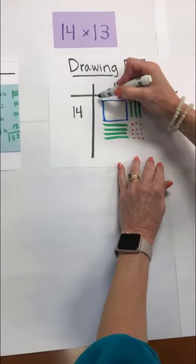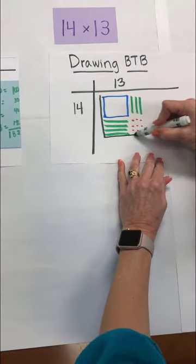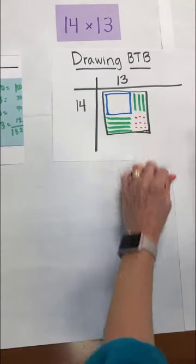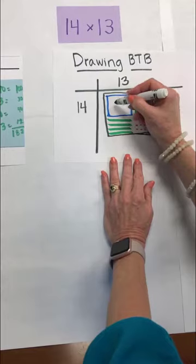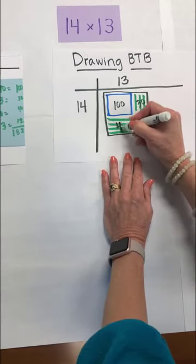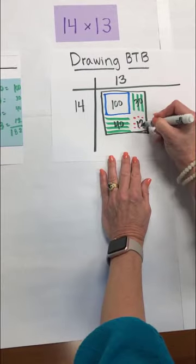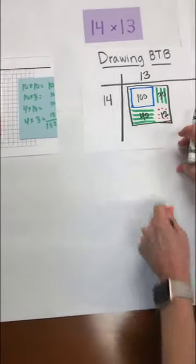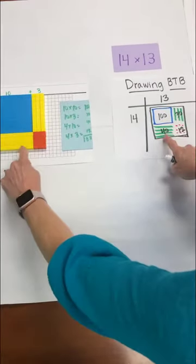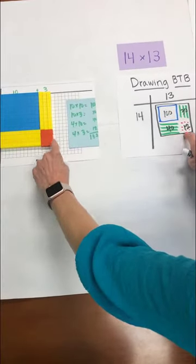So let's think about what this means. This is 100, this is our 30, this is our 40 and our 12 that we showed here. So 100, 30, 40 and 12.